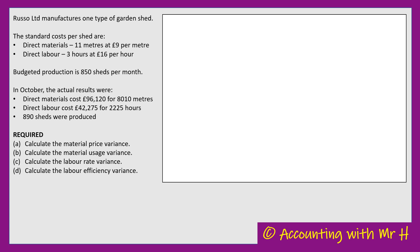Then they've told me that in October the actual results were what actually happened in terms of how much they spent on direct materials and direct labour. They've also told me that in October they actually produced 890 sheds. What's required is to calculate each of the four cost sub-variances. Variances — if you think about the word vary — it's essentially comparing what actually happened with the standard to see how well this company met the standards. A management accountant is reviewing it to see whether they met their standard or how effectively they managed their costs.